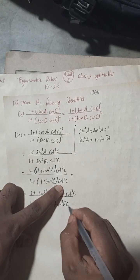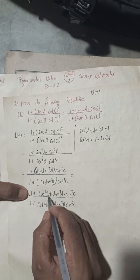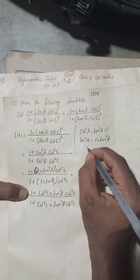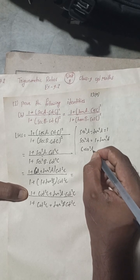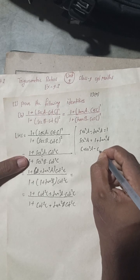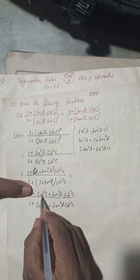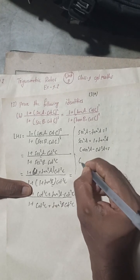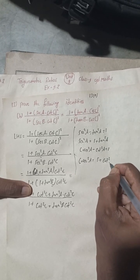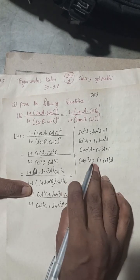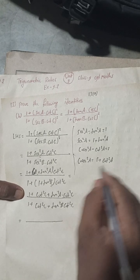We know the identity cosec²A − cot²A = 1, which gives cosec²A = 1 + cot²A. So for 1 + cot²C, we substitute cosec²C. Therefore 1 + cot²C = cosec²C.